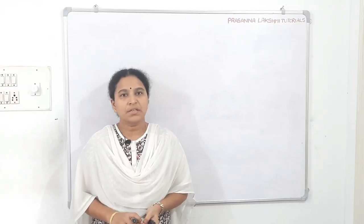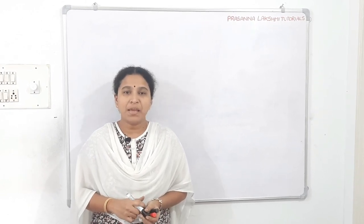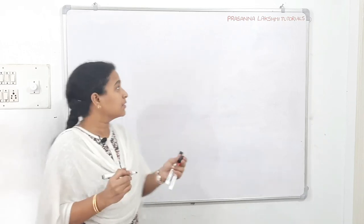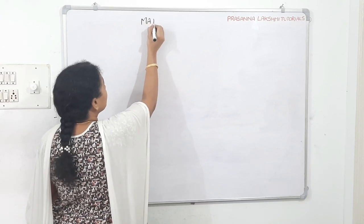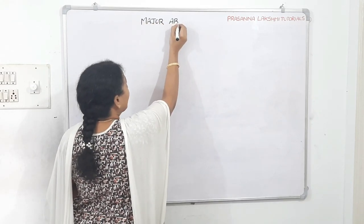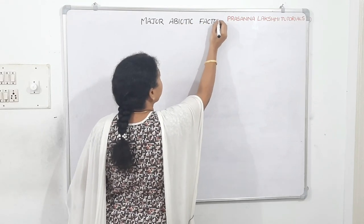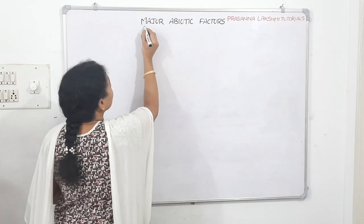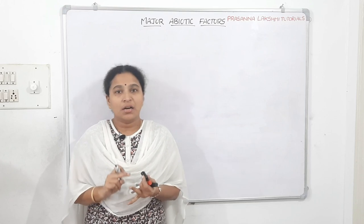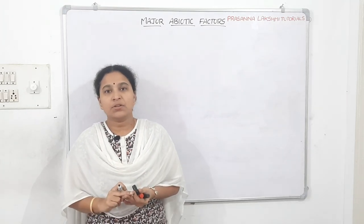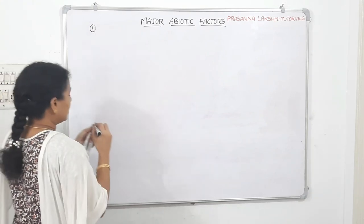Hello everyone. In today's session we will start with another topic of the chapter Organisms and Population, that is major abiotic factors which affect the organisms and population. Abiotic means non-living factors. Under that we have temperature, light, soil, and water. Let's start with the first factor, which is temperature.